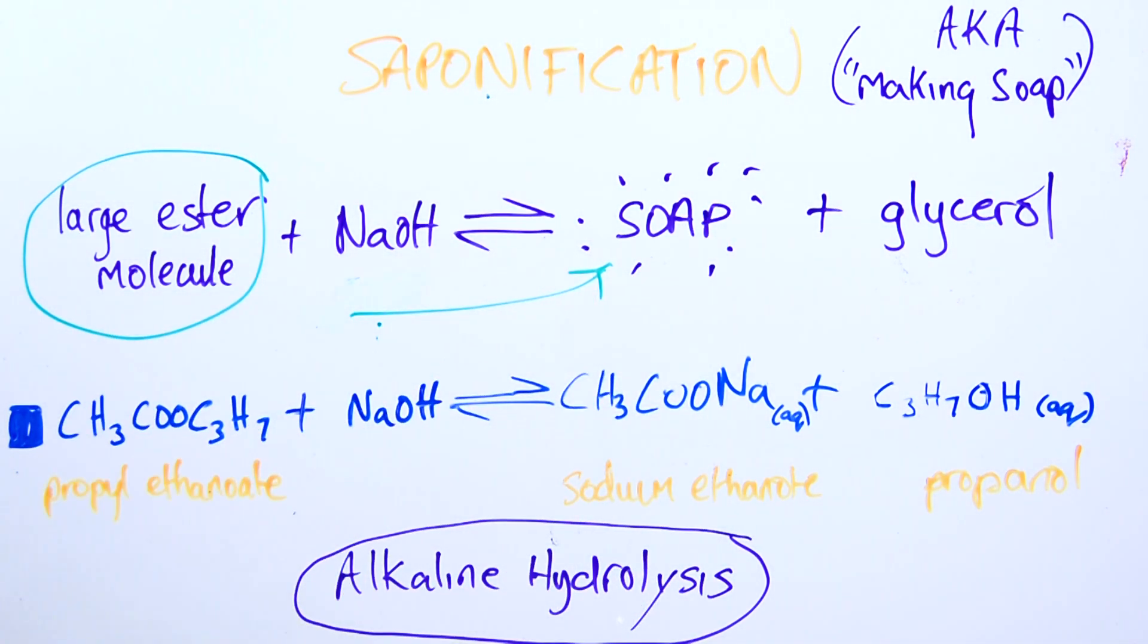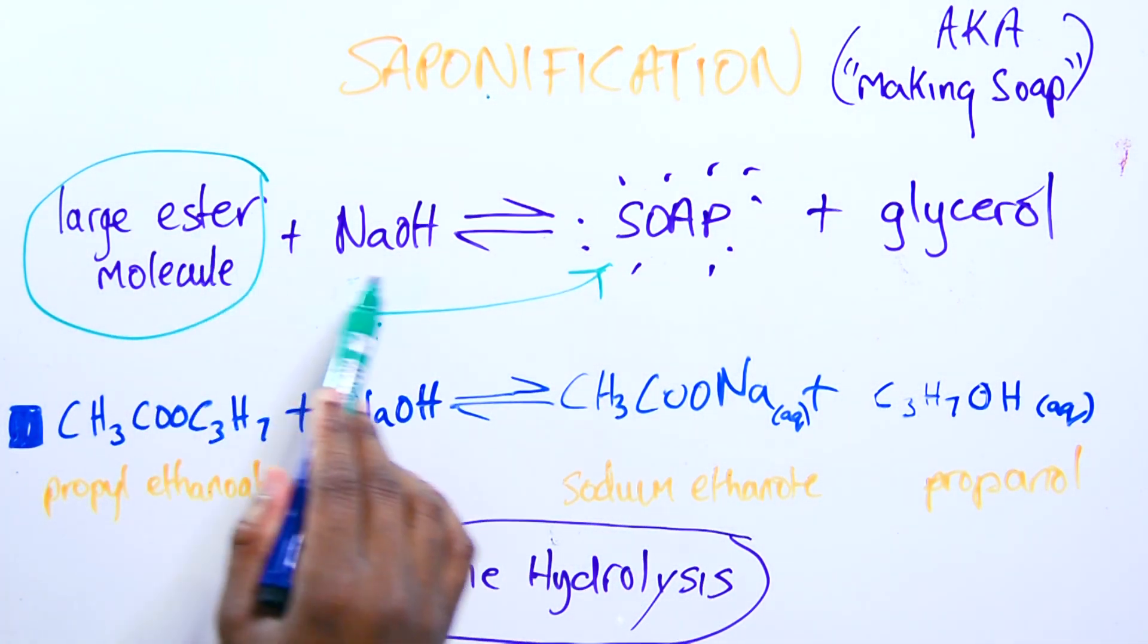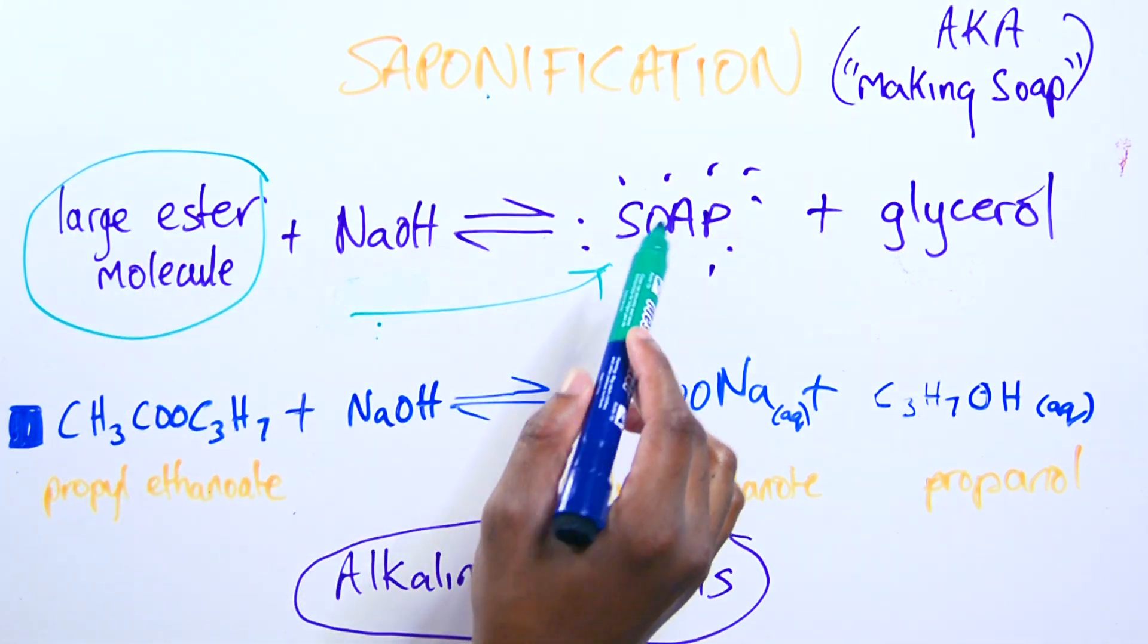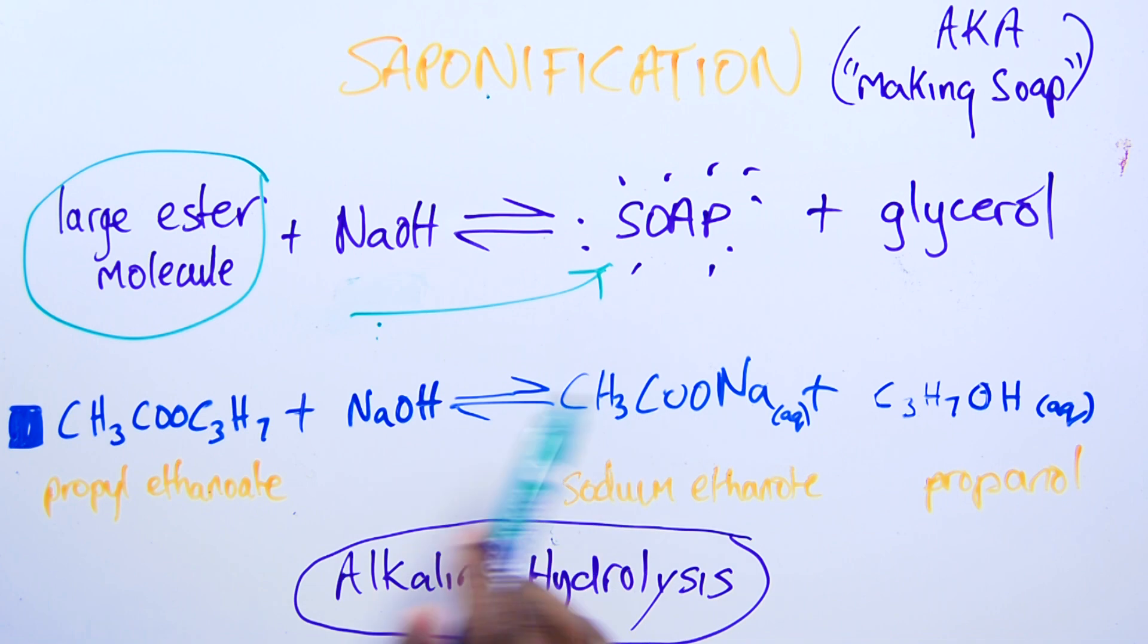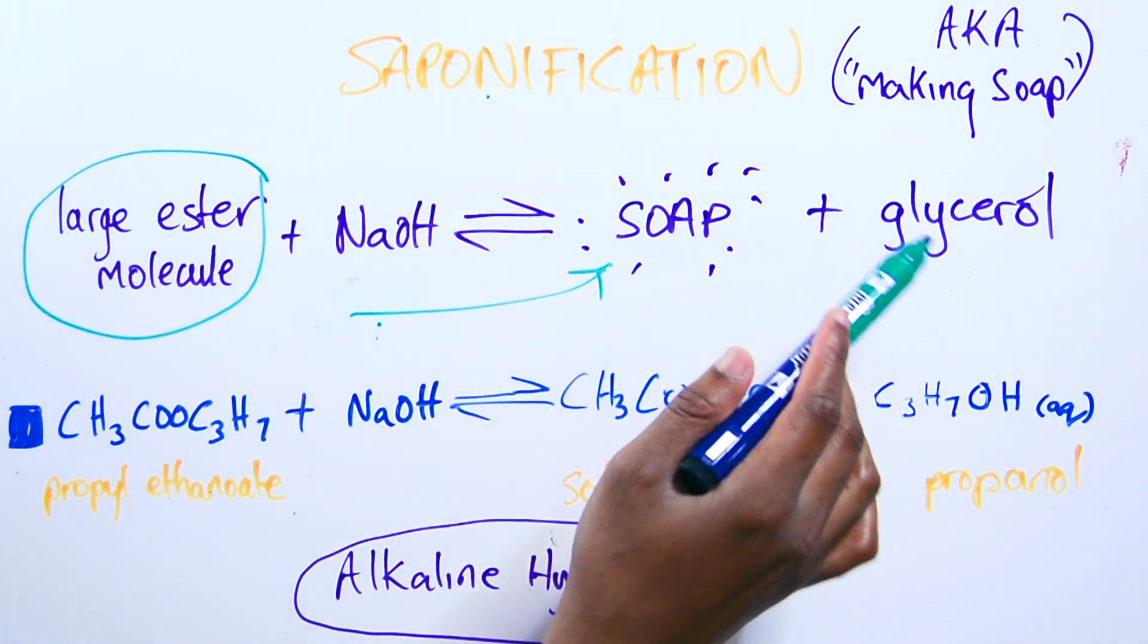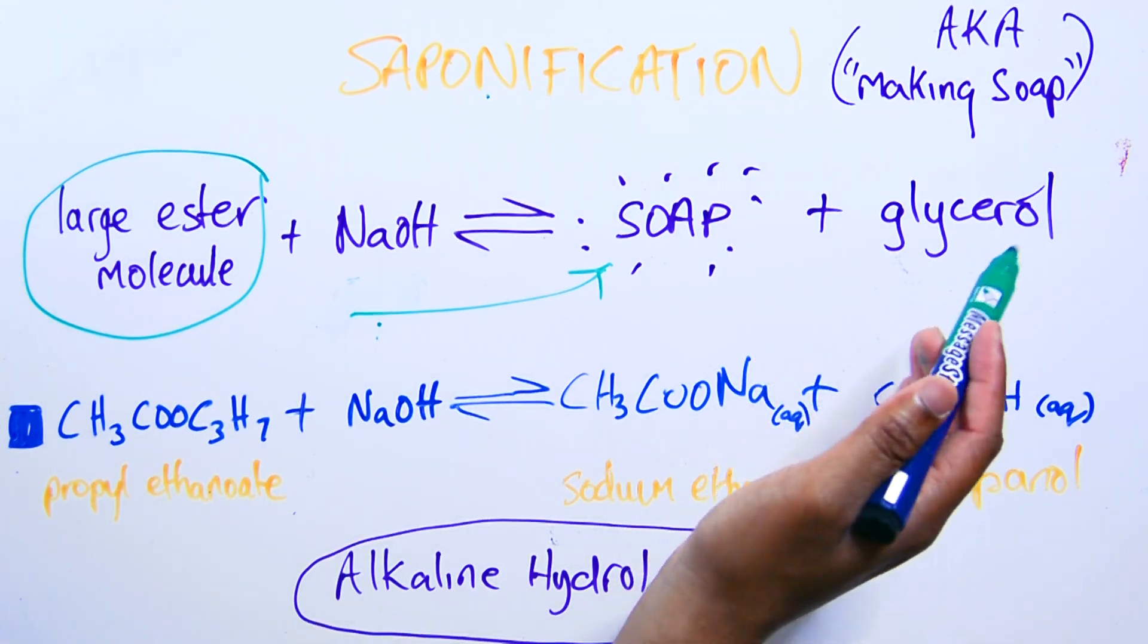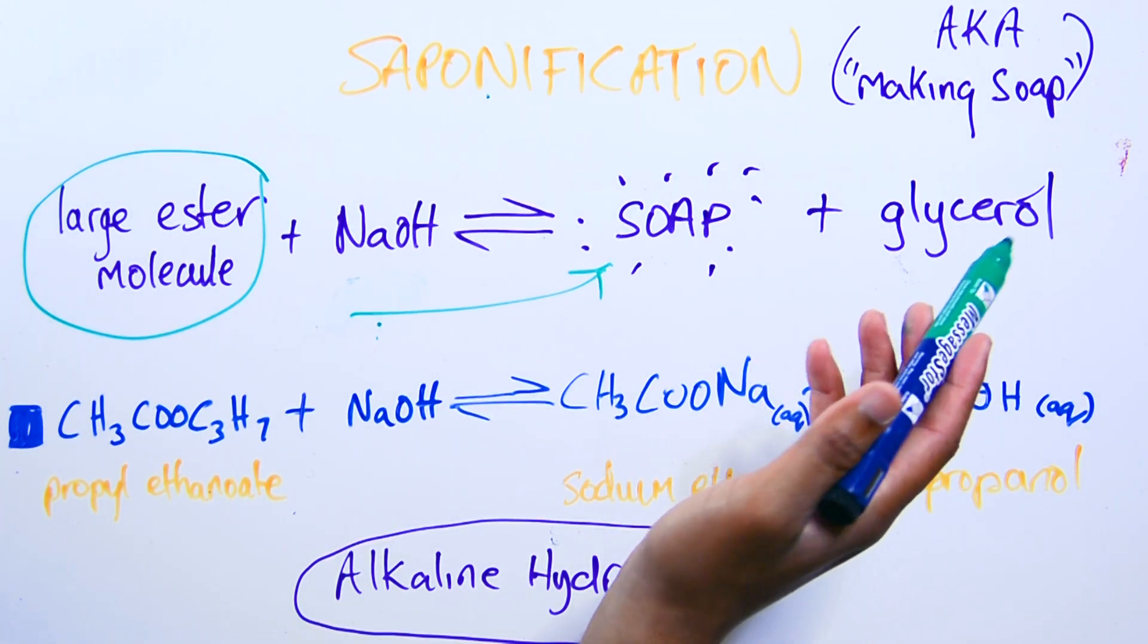So what you need to know is that the acid out of this long chain ester molecule is going to join up with the sodium. But you'll have longer chains to make soap. And the byproduct is glycerol, which is just a type of alcohol. But you'll have three OH groups in this.